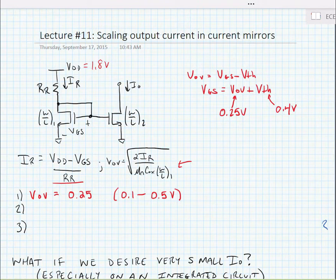So what we need to do now is find W over L for the desired current.